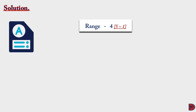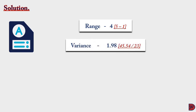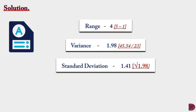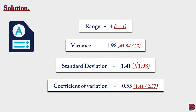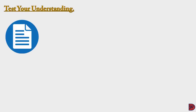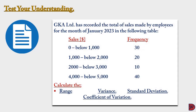The range is 4 (highest value 5 minus lowest value 1). The variance is 1.98, which is 45.54 divided by the total frequency of 23. The standard deviation is 1.41, which is the square root of 1.98. The coefficient of variation is 0.55, that is the standard deviation of 1.41 divided by the mean of 2.57.